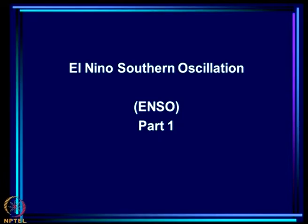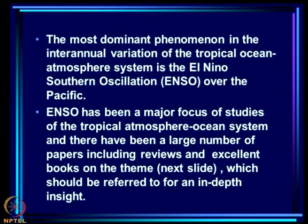We have prepared some background about the ocean to start learning about one of the most fascinating phenomena in the tropics, namely El Niño and the Southern Oscillation. Today will be the first of a set of lectures on El Niño and Southern Oscillation. The most dominant phenomenon in the interannual, that is to say year-to-year, variation of the tropical ocean-atmosphere system is the El Niño Southern Oscillation — ENSO — over the Pacific.